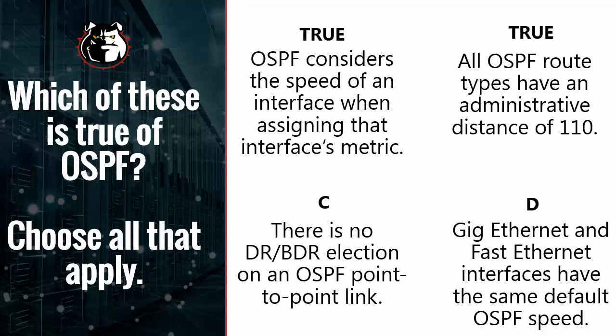C: There is no DR-BDR election on an OSPF point-to-point link — that is absolutely true. On a point-to-point link you only have two routers, so you don't need the orderly notification process for network changes; A tells B or B tells A, and that's it. The DR-BDR election exists to choose the router that notifies everybody on a segment about a change, and on a point-to-point link you simply don't need that overhead.